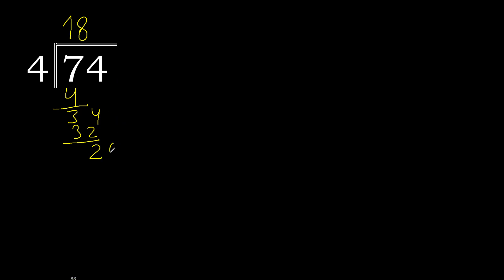There is no next number, therefore complete with 0 and a decimal point. 20. 4 multiplied by 5 is 20. 20 minus 20 is 0. 0, therefore finish.